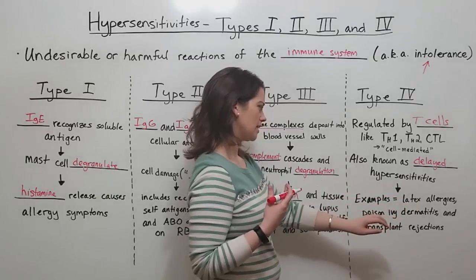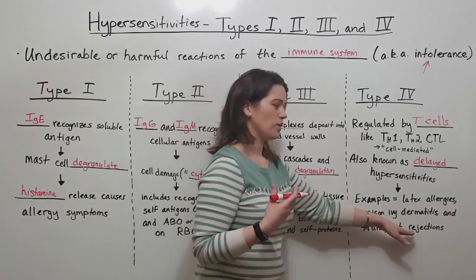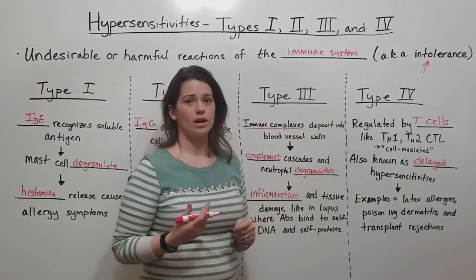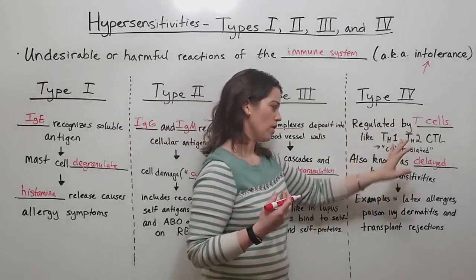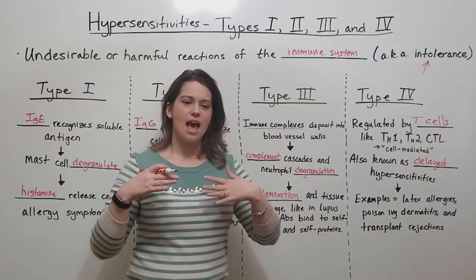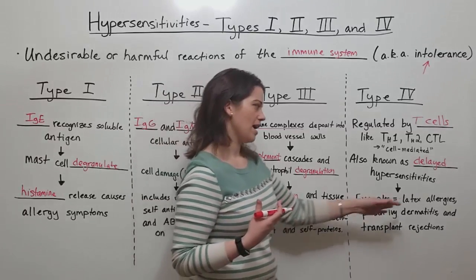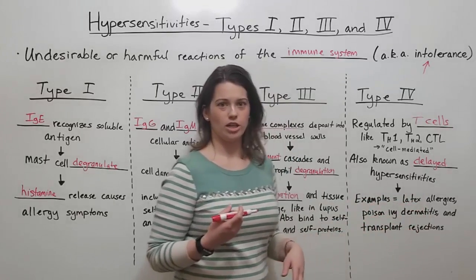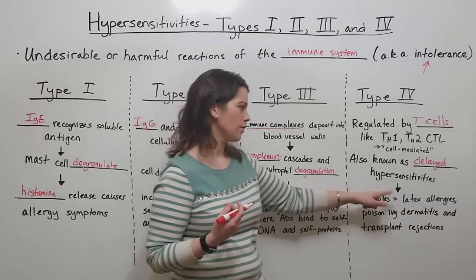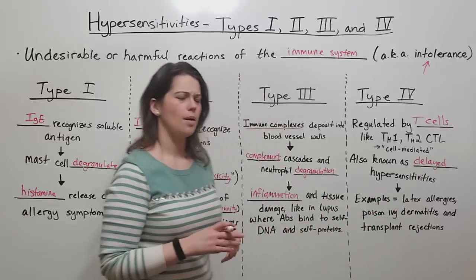This results in things like latex allergies, the rash and dermatitis from contact with poison ivy, and also transplant rejection. If someone gets a lung transplant and their body rejects it, that is a type 4 hypersensitivity where T cells recognized the transplanted organ as foreign and had a strong overreaction to eliminate what they view as a threat — resulting in either an allergy, a rash, or worse, major rejection of a needed organ. It's called delayed hypersensitivity because symptoms can take several days following exposure to appear.